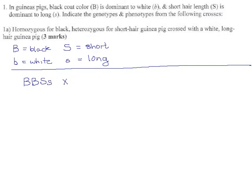And now we cross this with a white guinea pig. To be white you have to be little b little b. And long hair—to be long hair you have to be little s little s. Trying to make the little s's very tiny. So, there are our two parents, and that probably means it's time for a Punnett graph.